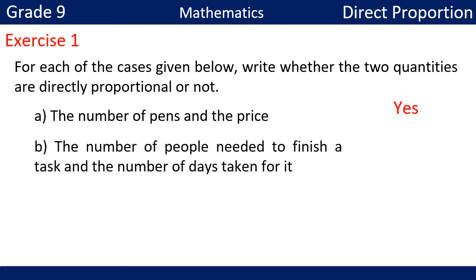Second: the number of people needed to finish a task and the number of days taken for it. When the number of people increases, the number of days decreases. When the number of people decreases, the number of days increases. Therefore, the number of people needed to finish a task and the number of days taken are not directly proportional.